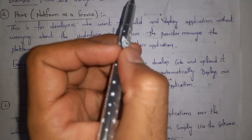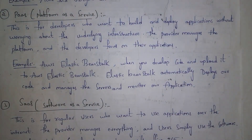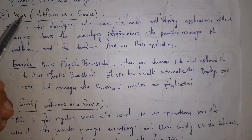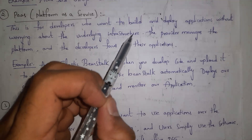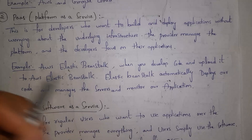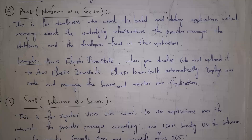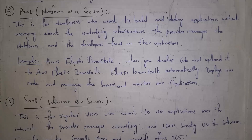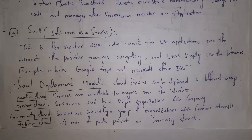Placing our software onto a server is known as deployment. Whenever we select PaaS, cloud service providers give us both hardware and some software tools in order to build and deploy our application. For example, in AWS cloud, one of the famous PaaS services is AWS Elastic Beanstalk. After developers write their code and place it in Elastic Beanstalk, it automatically deploys the code to the server, monitors the application, and manages the server.